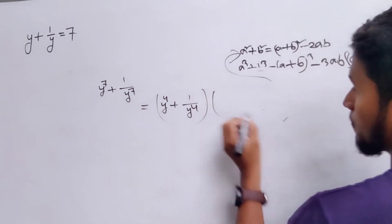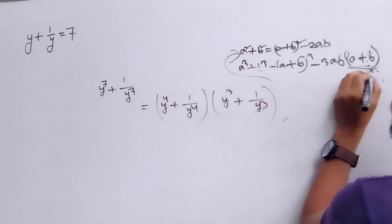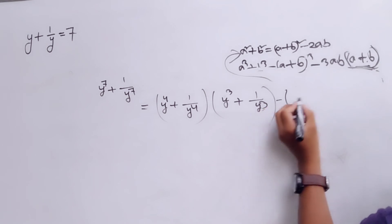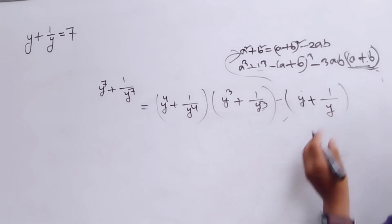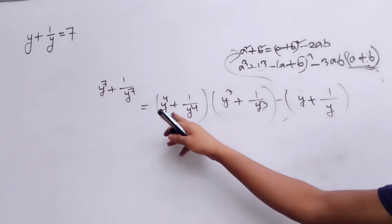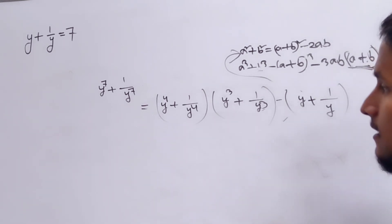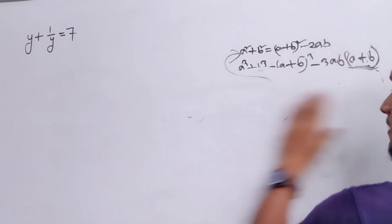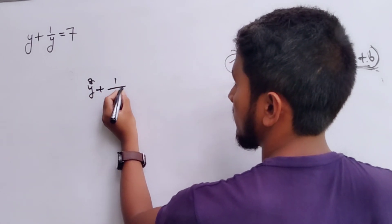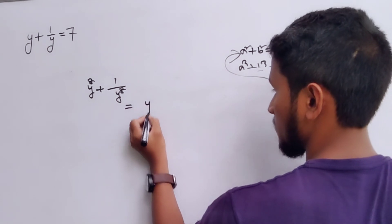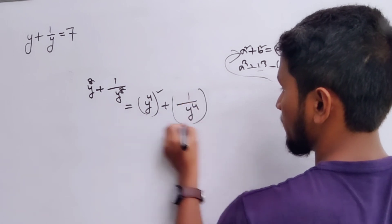4 into y³ plus 1 by y³. This is the last part of the question. This is y plus 1 by y. This is the question. By incorporating time and time, 1 is 1. Let me use this 2. Let me say 4 into 2.